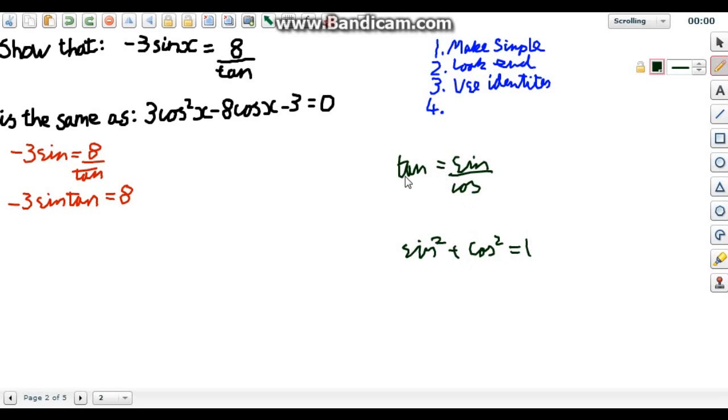So the first thing I always do is I look for the tan. Do we have any tan here? Yes. We don't want any in the end product. So I'm going to change that tan into sin over cos because then we've only got two things to worry about instead of three.